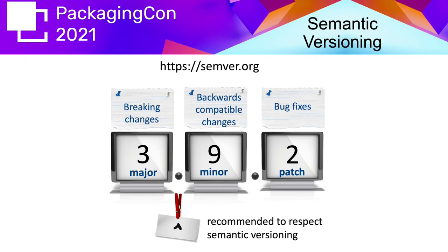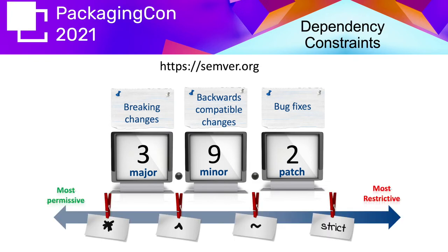Package managers tend to use dependency constraints to indicate whether they trust the dependent. For example, if you use the caret constraint, you allow any patch or minor update of the package you depend upon — this is the recommended practice when following semantic versioning. One can also use less strict constraints like the tilde, which only allows patch updates, or more permissive constraints that also allow major updates.